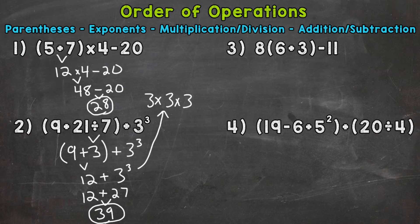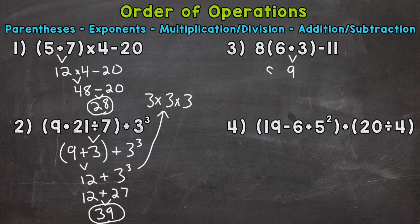On to number 3, where we have 8, parentheses, 6 plus 3, end parentheses, minus 11. Whenever you have a number right next to a set of parentheses, it's multiplication. So that's 8 times the quantity 6 plus 3, minus 11. Let's go through our process. Any parentheses? Yes — that's where we start. 6 plus 3 gives us 9. Bring down everything we did not use. Bring down the 8, and we can put a multiplication sign between that 8 and 9 now.